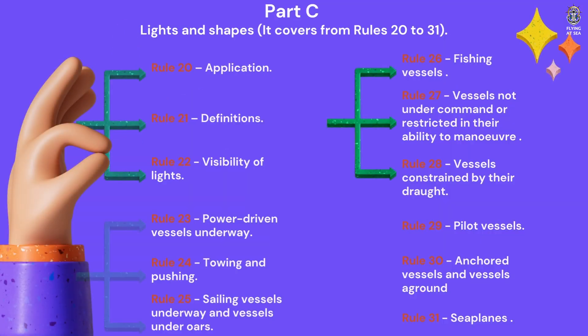Part C, Lights and Shapes. It covers from Rules 20 to 31. Rule 20, Application. Rule 21, Definitions. Rule 22, Visibility of Lights. Rule 23, Power Driven Vessels Underway. Rule 24, Towing and Pushing. Rule 25, Sailing Vessels Underway and Vessels Under Oars. Rule 26, Fishing Vessels. Rule 27, Vessels Not Under Command or Restricted in Their Ability to Maneuver. Rule 28, Vessels Constrained by Their Draft. Rule 29, Pilot Vessels. Rule 30, Anchored Vessels and Vessels Aground. Rule 31, Seaplanes.